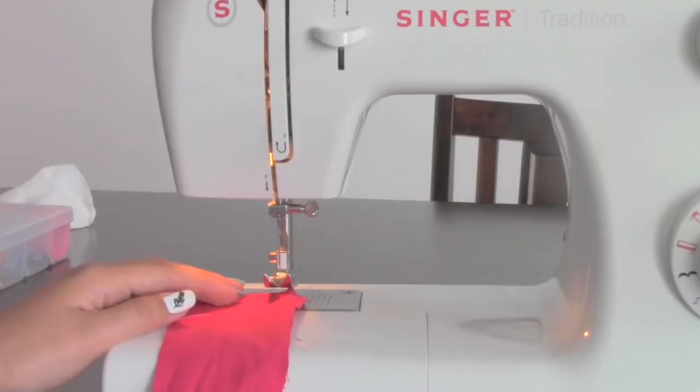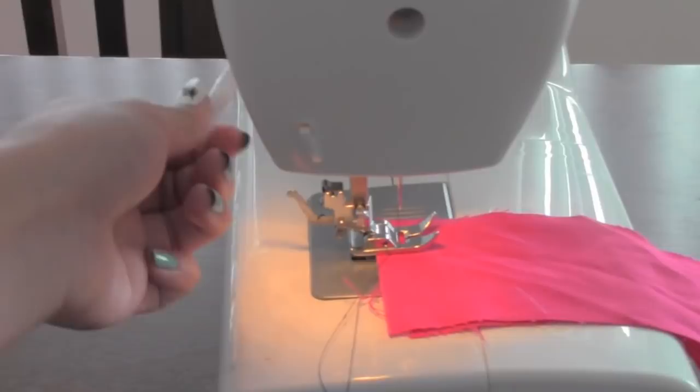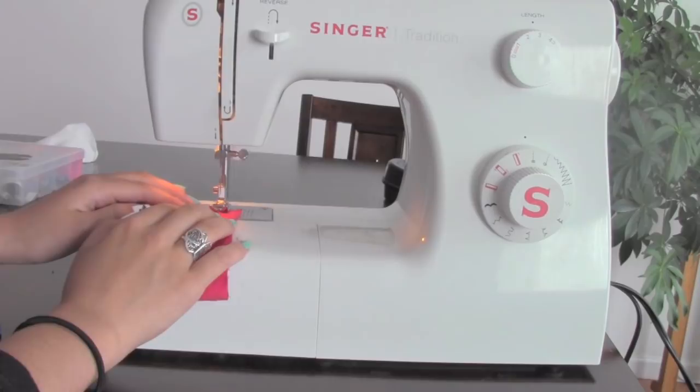Place your fabric between the presser foot, which is this, and the needle plate. So right between that, place your presser foot down. This is the lever that's going to place the presser foot down. So you want to leave it down at all times when sewing. Place the foot pedal with your foot slowly.